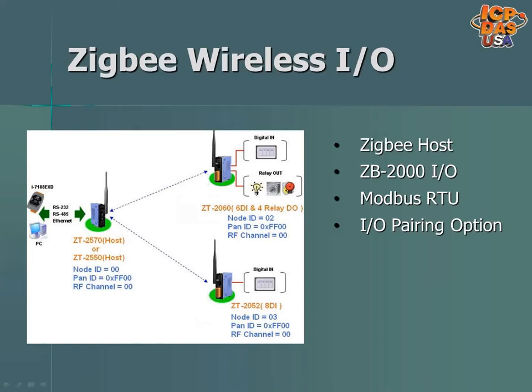ZigBee wireless I/O modules can communicate wirelessly over Modbus RTU protocol. The host converter can be connected to a PC or controller like our touchscreen PLCs, UPAC embedded controllers, or PAC controllers. The program on the PC or controller can communicate with the ZigBee I/O modules as if they were directly connected. With the I/O pairing option, no host converter is needed, so the input on one can trigger the output on another in a stand-alone application.